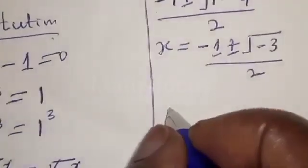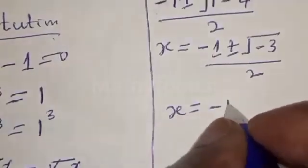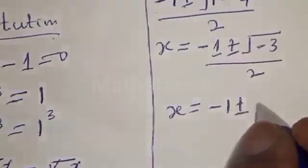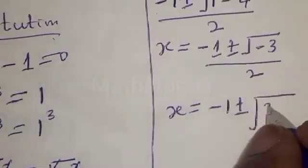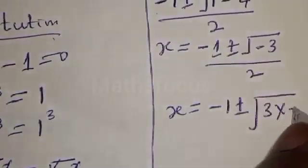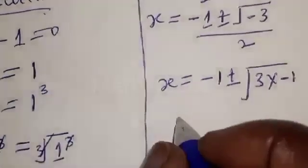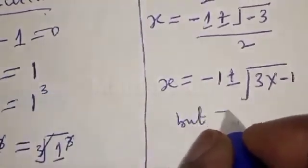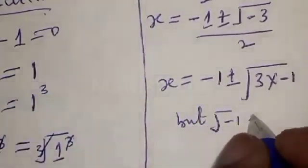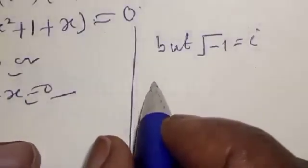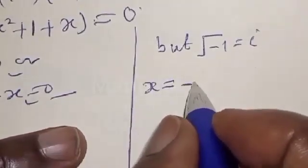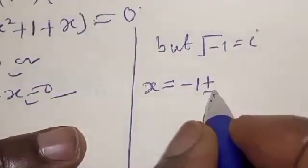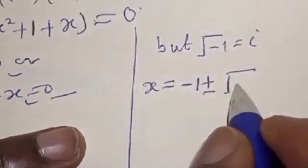Therefore, we have X equals minus 1 plus or minus the square root of minus 3, which can be expressed as the square root of 3 multiplied by minus 1.